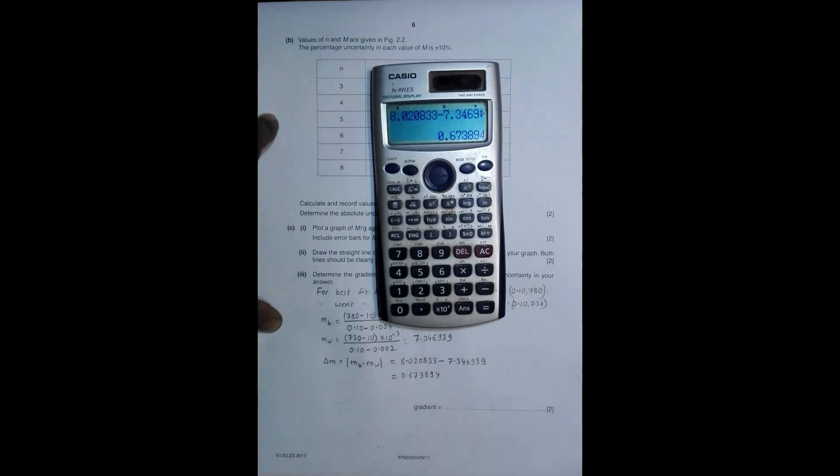Now, since I have to write the uncertainty in two significant figures maximum, it will be equal to 0.67, so plus minus 0.67.